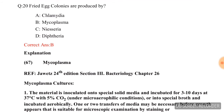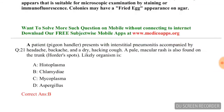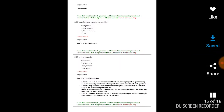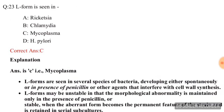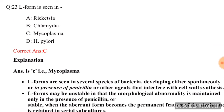Next question: fried egg colonies are produced by — chlamydia, mycoplasma, Neisseria, or diphtheria? The correct answer is mycoplasma. Following question: pleomorphism is seen in — Rickettsia, chlamydia, mycoplasma, or Aspergillus? The correct answer is mycoplasma, option C.